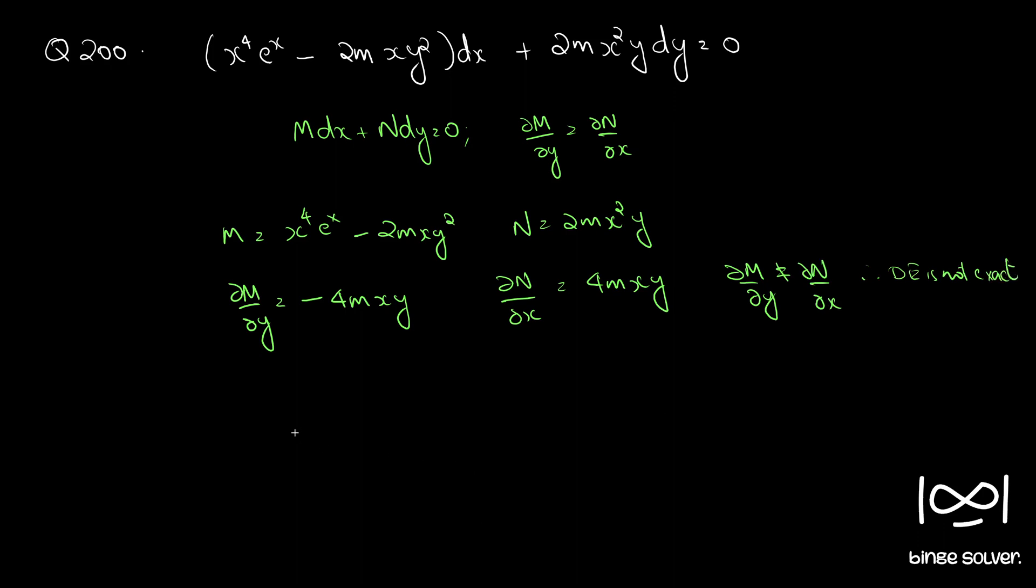Now we will use rearrangement and see if it can be converted to an easily integrable form, which is x raised to 4 e raised to x dx minus 2m xy squared dx plus 2m x squared y dy equal to 0.